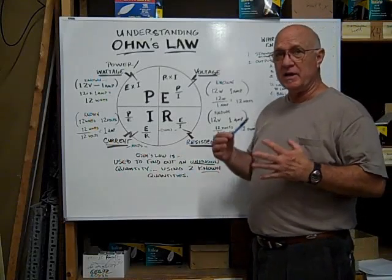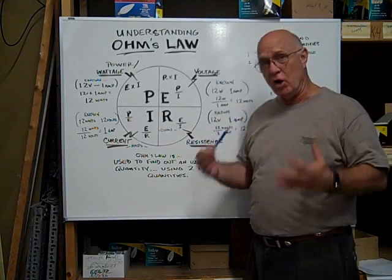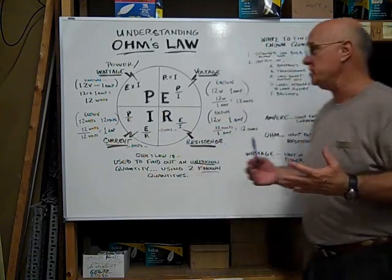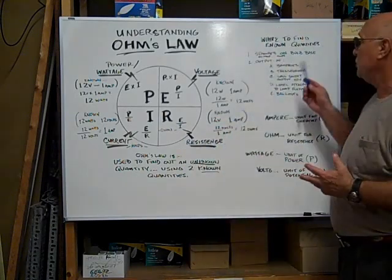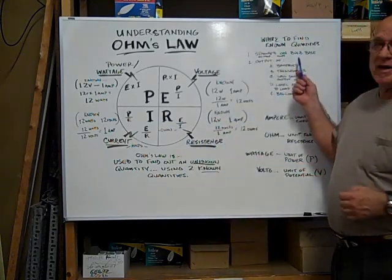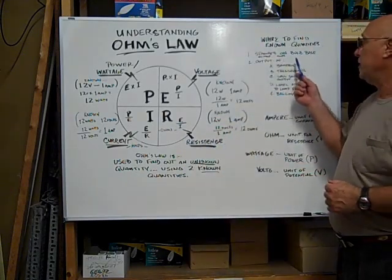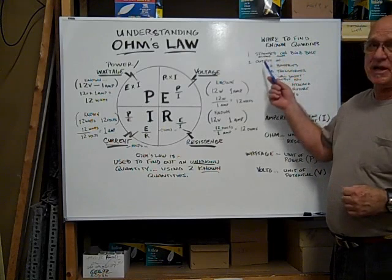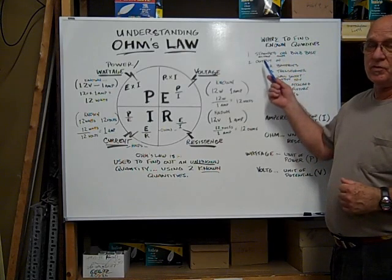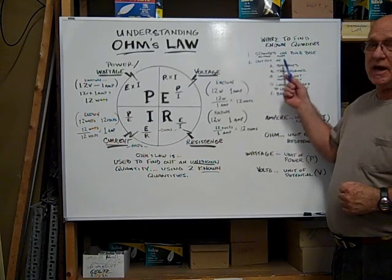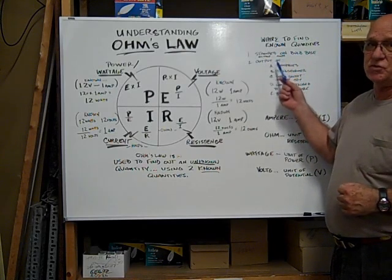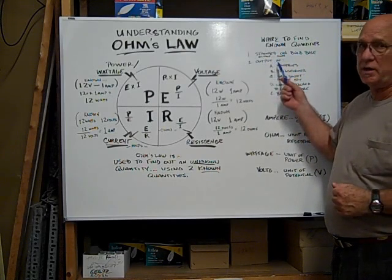Now, to find out the known quantities, you can look on the base of the bulb and usually it's stamped with the voltage and amperage. That gives you two known quantities.